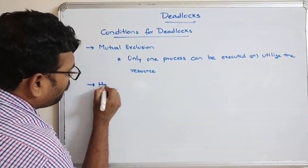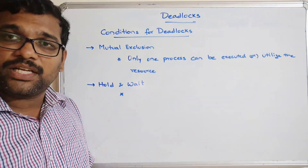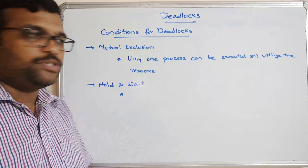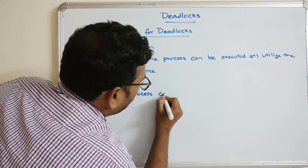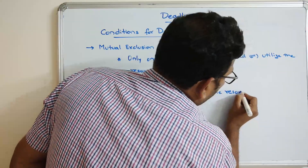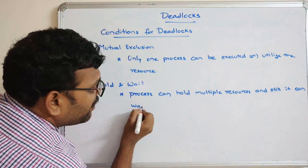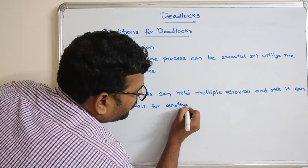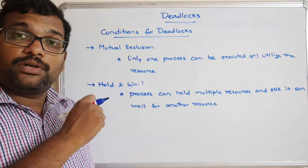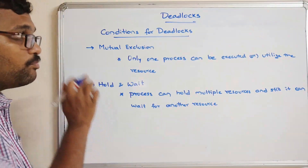The second condition is hold and wait. This means one process can hold multiple resources and still wait for another resource. A process can hold multiple resources and yet wait for an additional resource. Only after getting the needed resource can it complete and release what it holds.